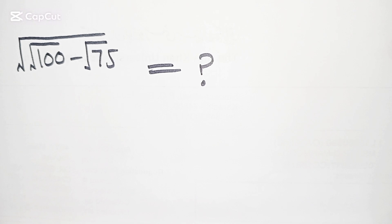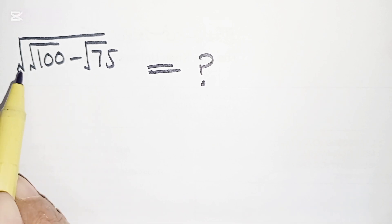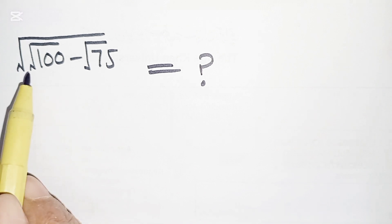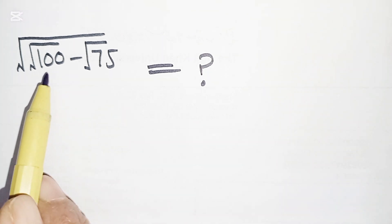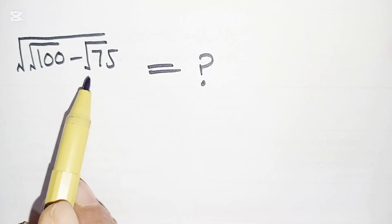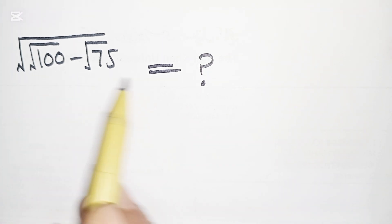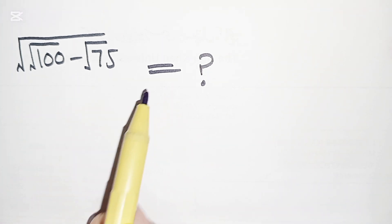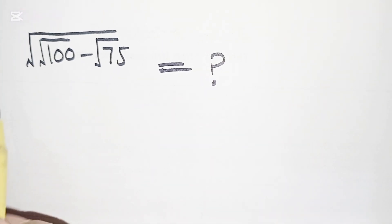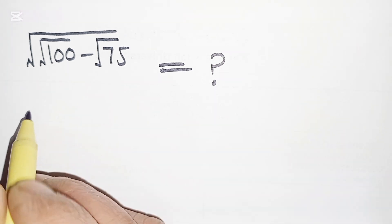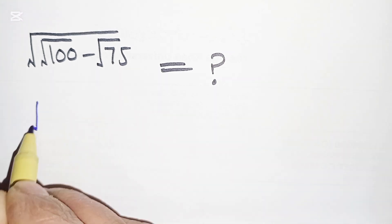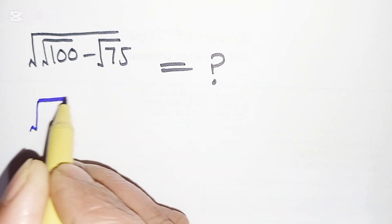Hello everyone, welcome. We will solve a nice problem which is √100 minus √75. What is the solution? First of all, we can write this as: